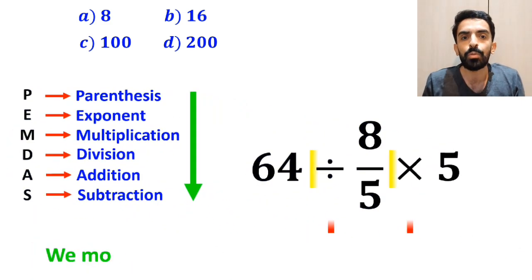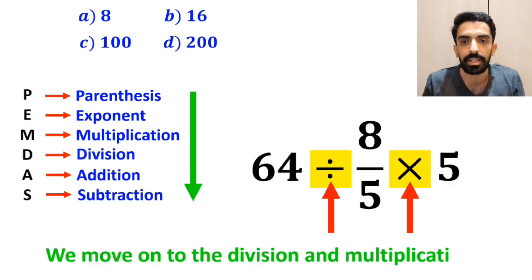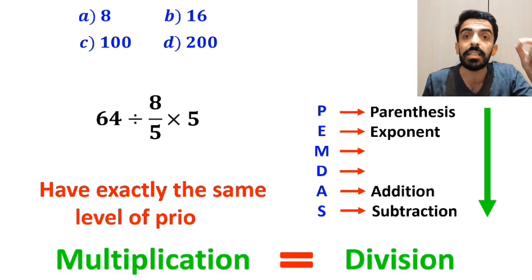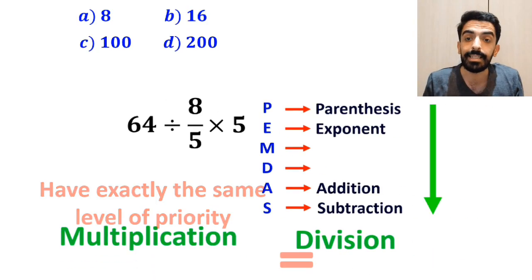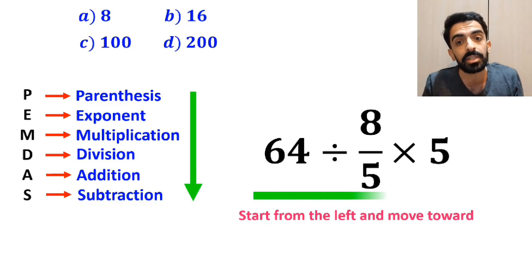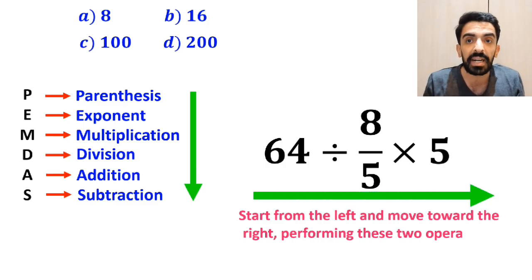In the next step, we need to move on to the division and multiplication. However, it's very important to note that multiplication and division have exactly the same level of priority in the PEMDAS rule. In this situation, the best approach is to start from the left and move toward the right, performing these two operations in order.